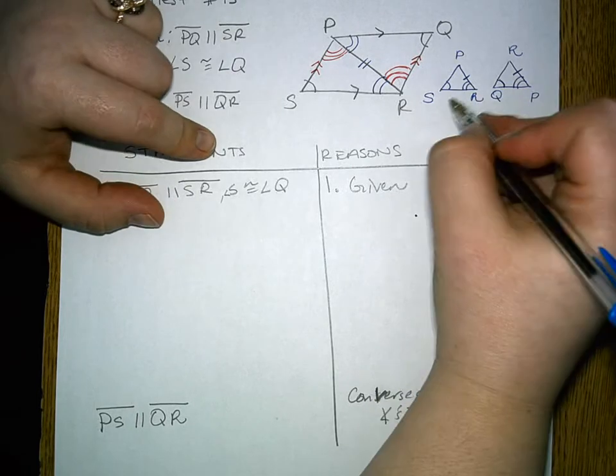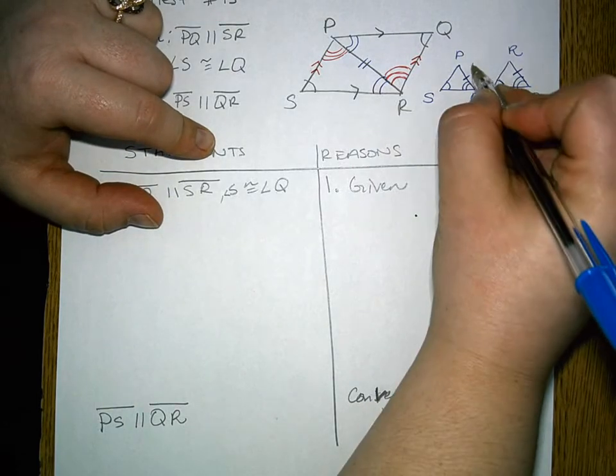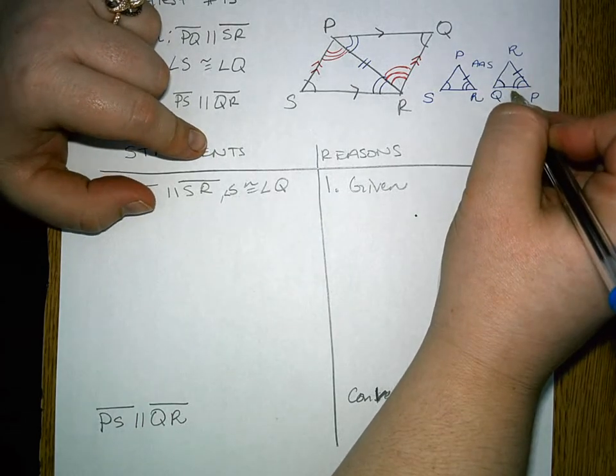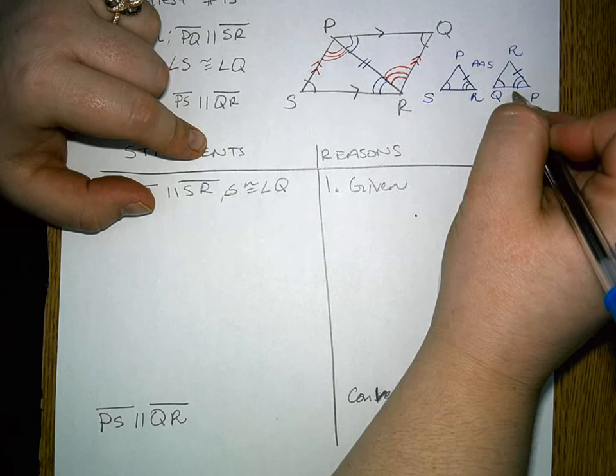And so you can see here that these two triangles are going to be congruent by angle-angle-side. That's also going to be part of our proof. Make sure that that is included.